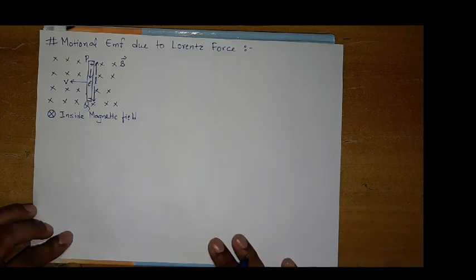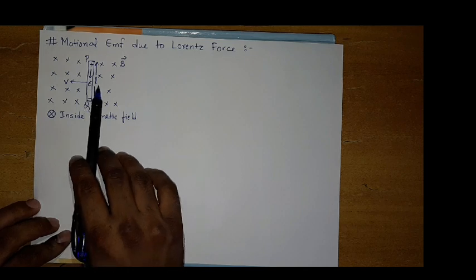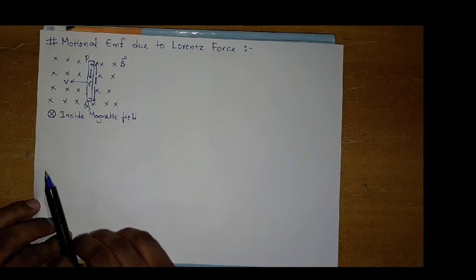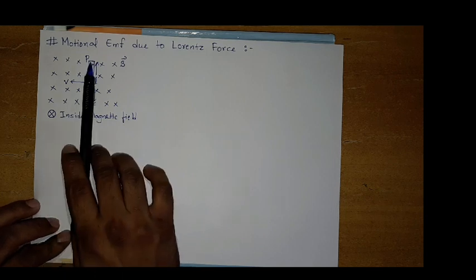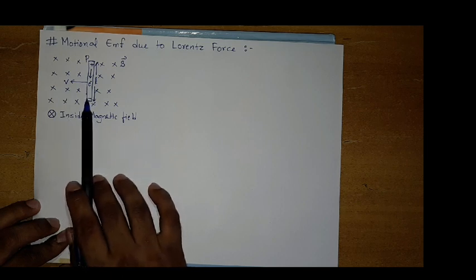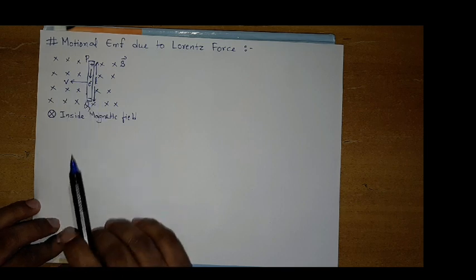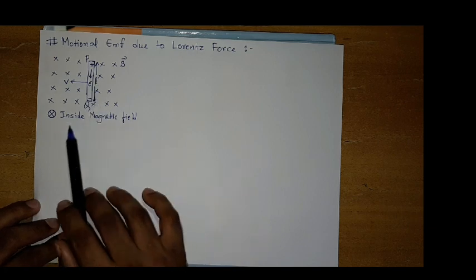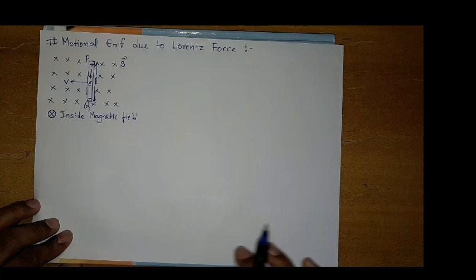Now in this diagram, we have only one rod with length L and PQ its end. We can see that we move the rod in magnetic field. So this is the motion of conductor inside a magnetic field. Here magnetic field lines are going into the surface. This is the cross symbol. Clear?